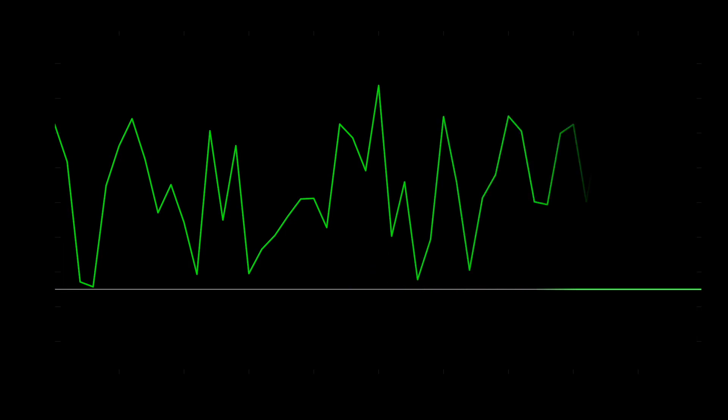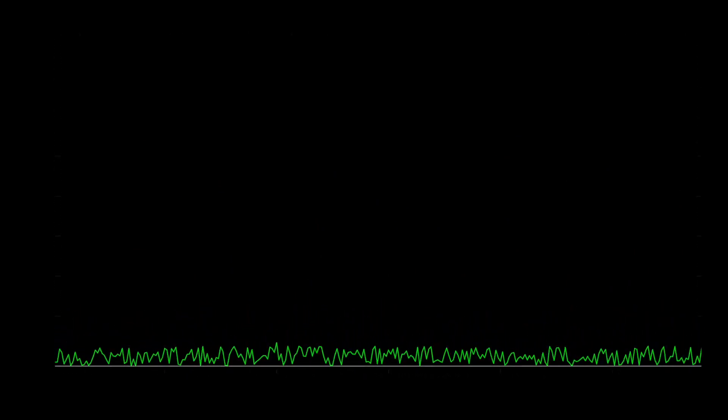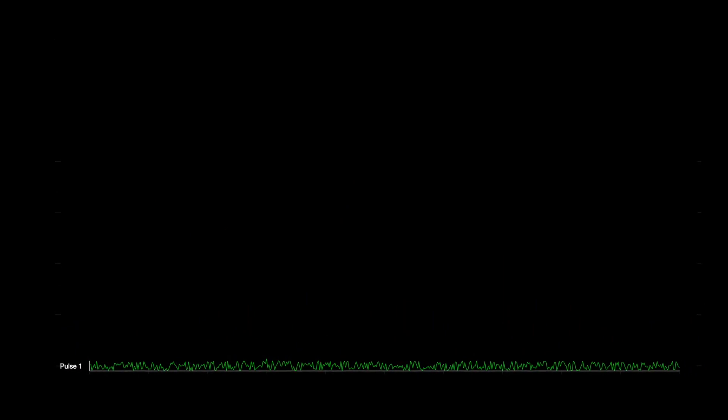If we look across the entire received signal, it's kind of hard to tell exactly where the pulse is. But all is not lost because we can store this signal in a buffer and then wait for another pulse to return. The second pulse is also swamped by noise. And once again, it's hard to see the signal.